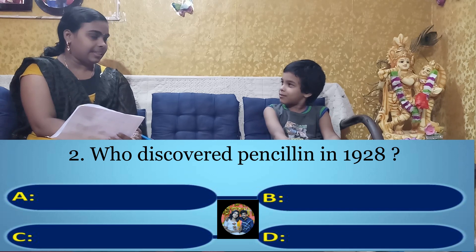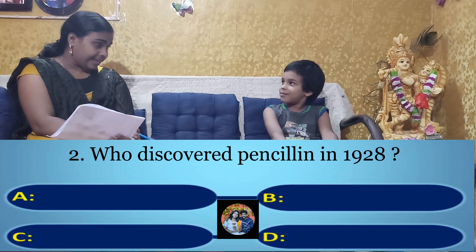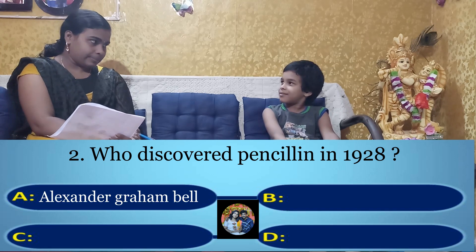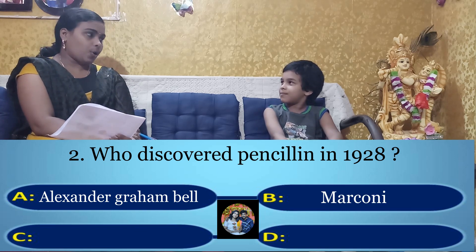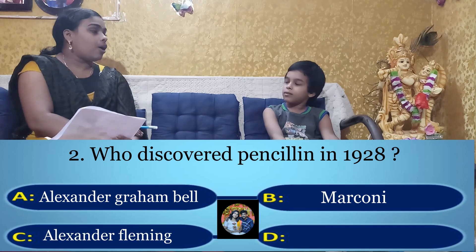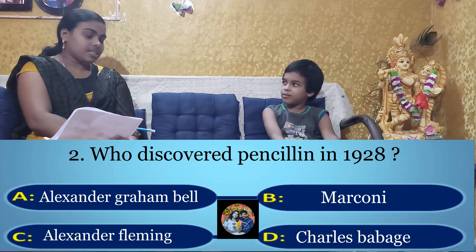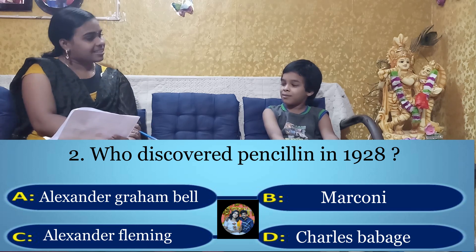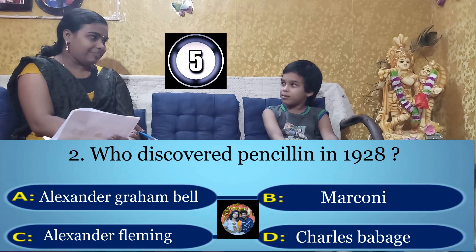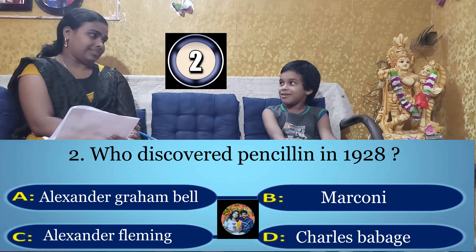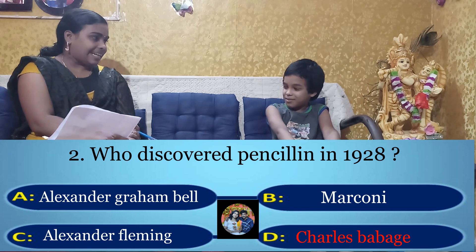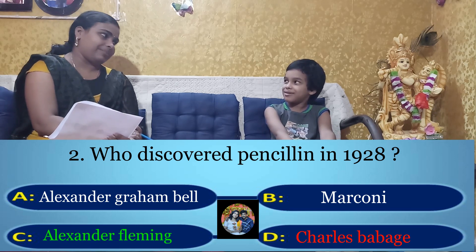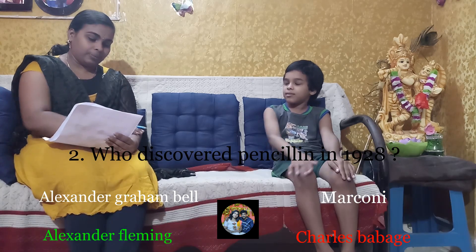Second question: Who discovered penicillin in 1928? Option A: Alexander Graham Bell, Option B: Marconi, Option C: Alexander Fleming, Option D: Charles Babbage. Your time starts now. Charles Babbage — wrong answer! The right answer is Option C: Alexander Fleming.